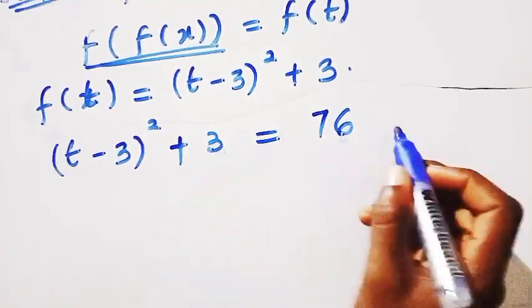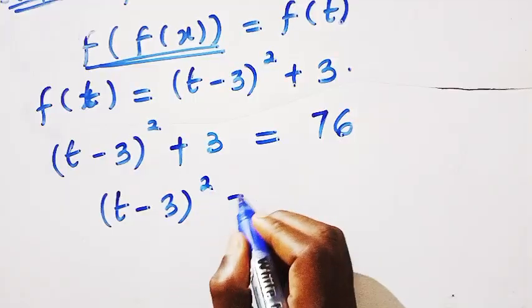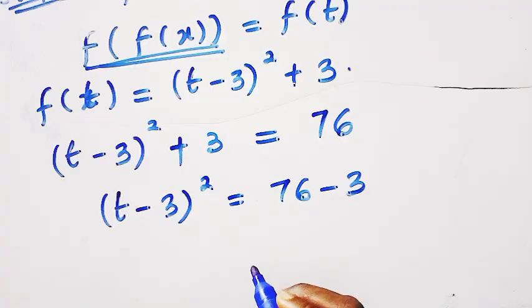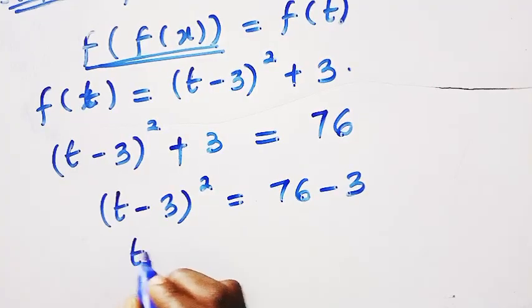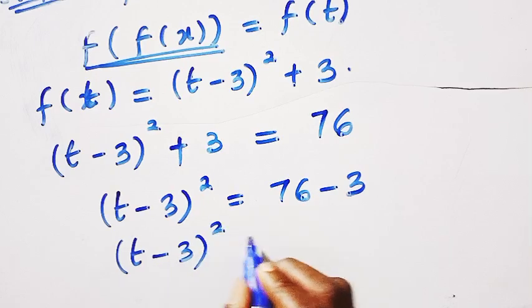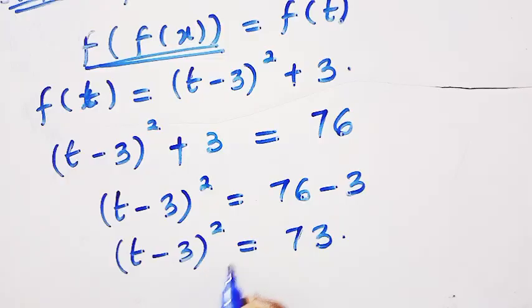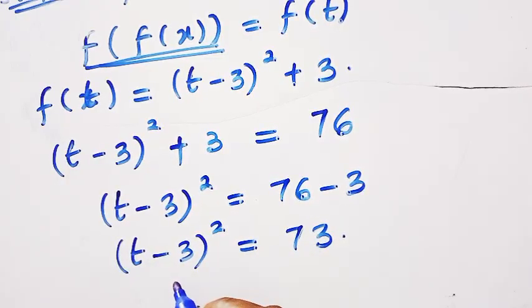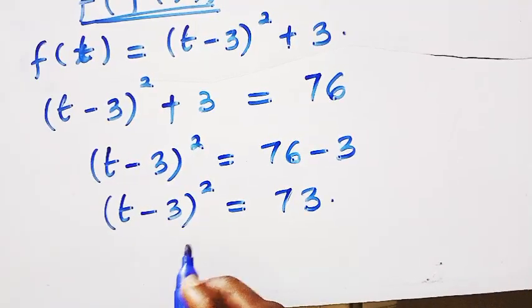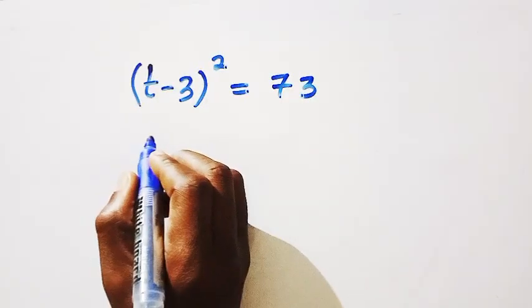So let's take 3 to the other side. We have t minus 3 raised to the power 2 equals 76 minus 3. And 76 minus 3, it gives us 73. So we have t minus 3 squared equals 73. And to get the value of t, we firstly take the square root of both sides.